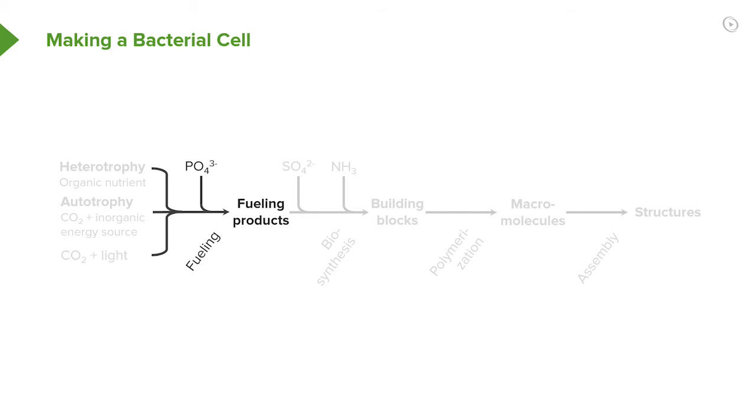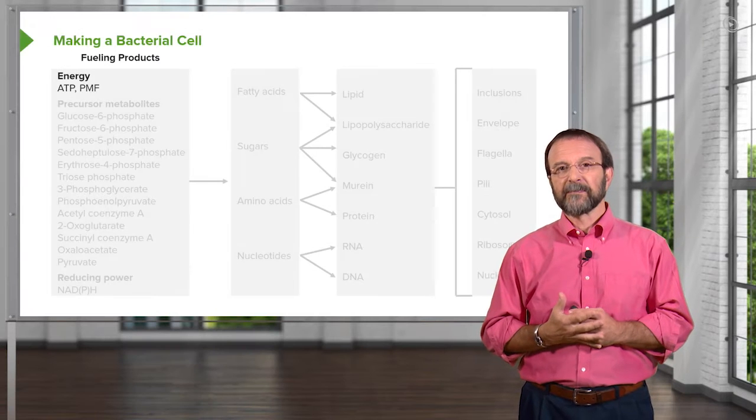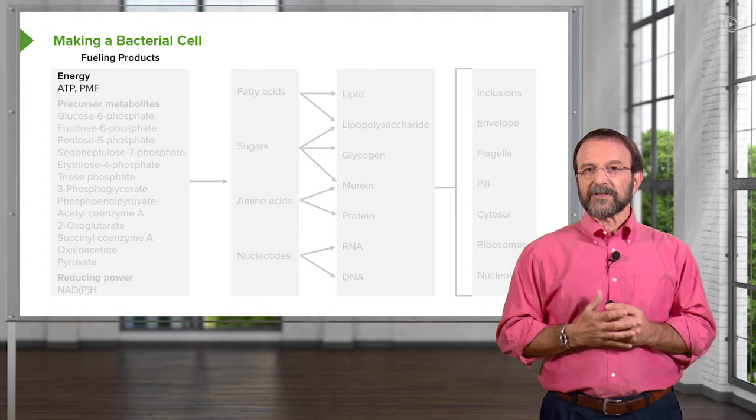We then make what we call fueling products, the building components of the larger molecules. We take those and we make building blocks like amino acids. From those, we can make macromolecules by polymerizing them like DNA or lipids. And finally, we can take the macromolecules and build structures in the bacteria. So that's an overview of how all of this happens.